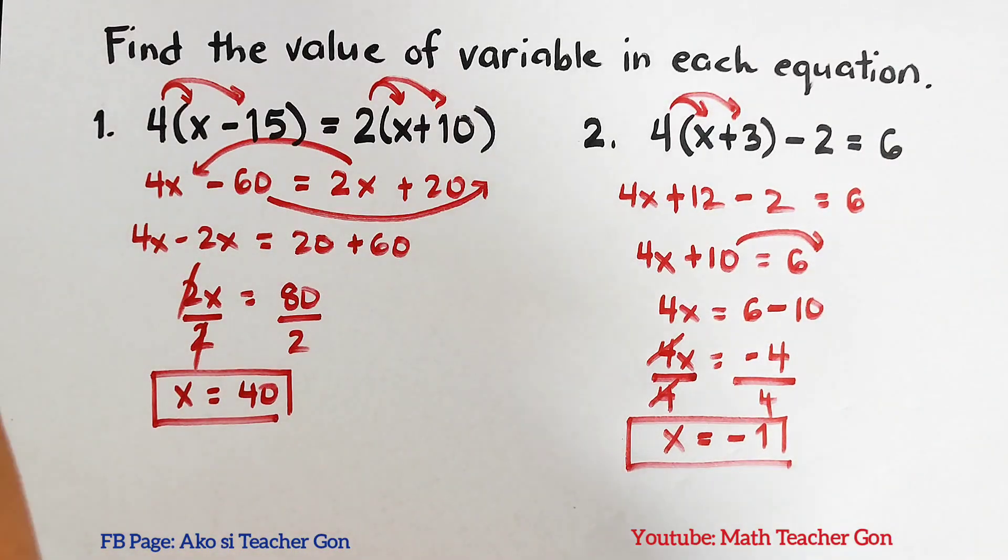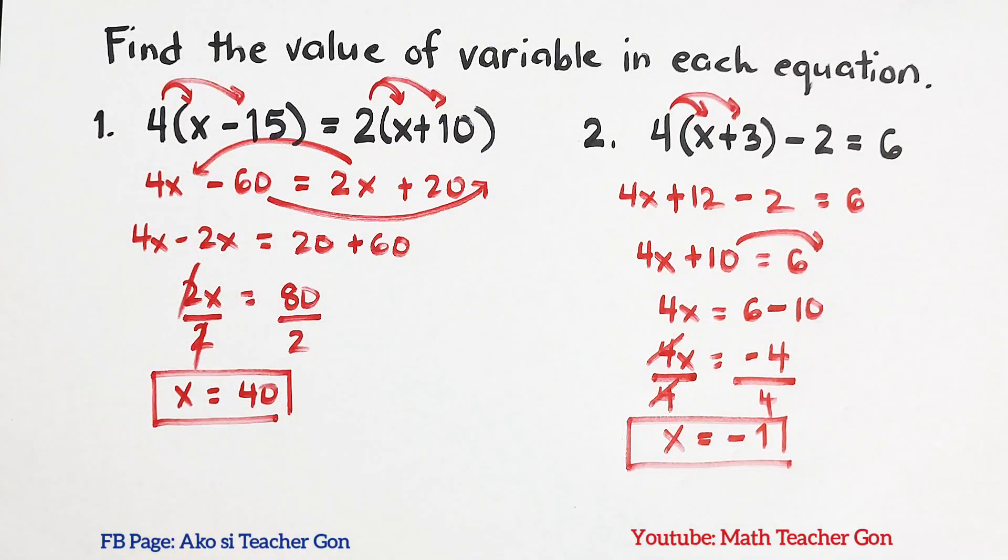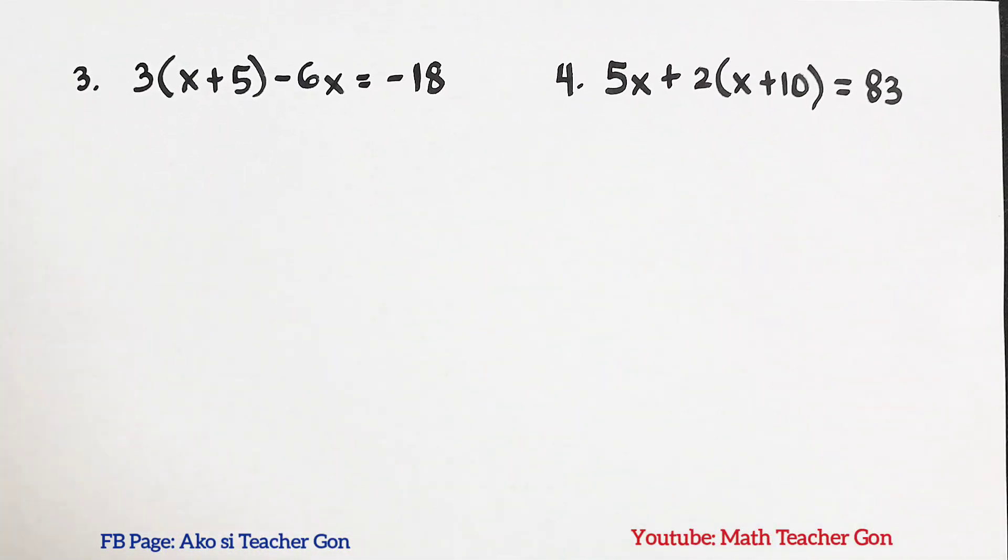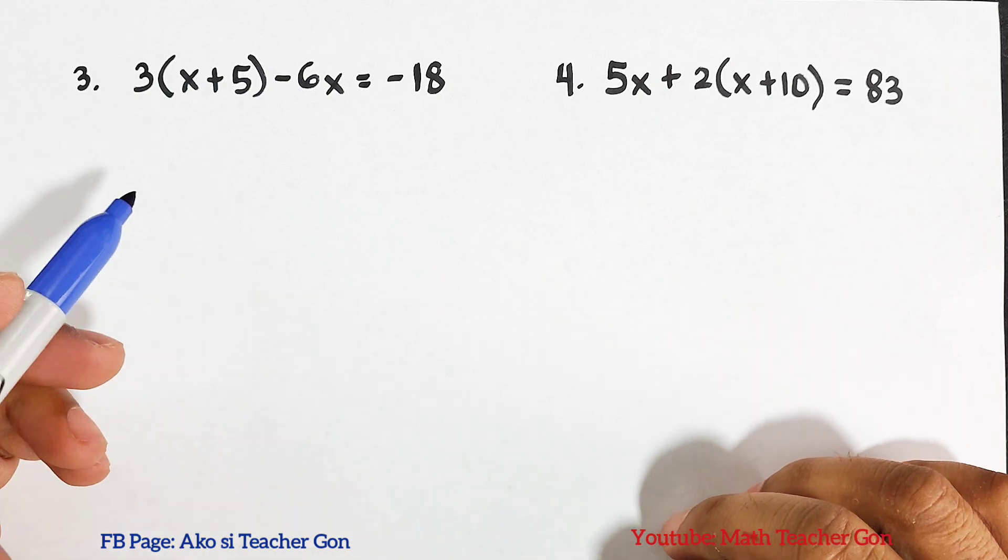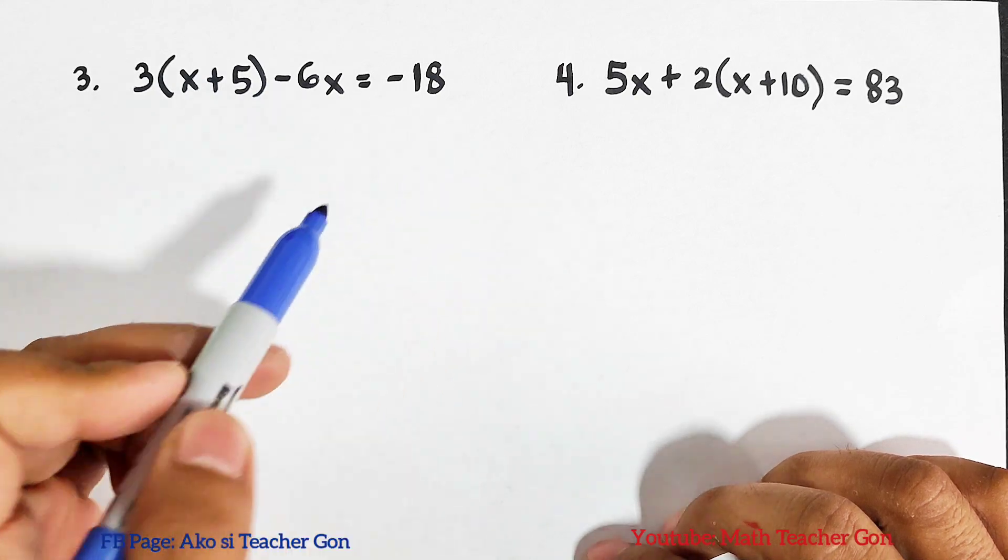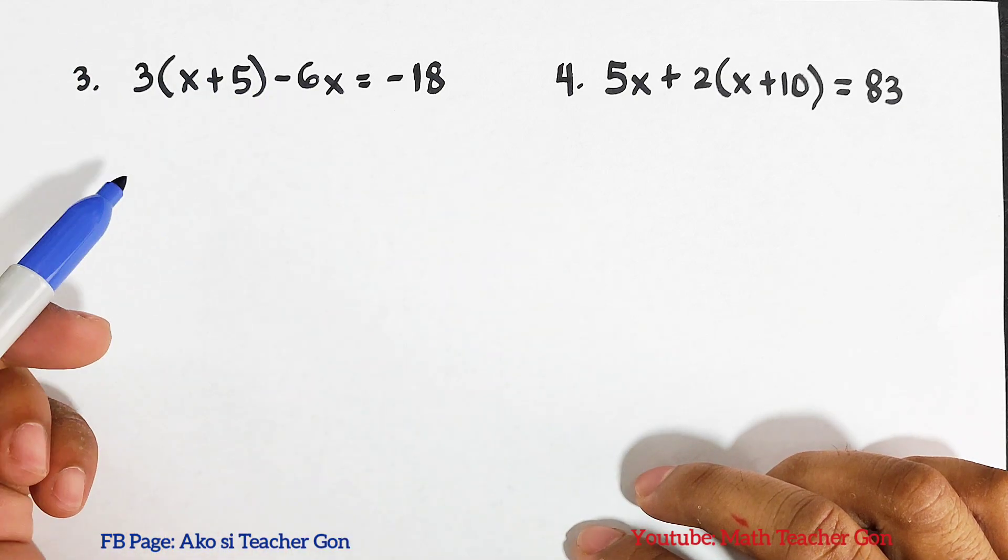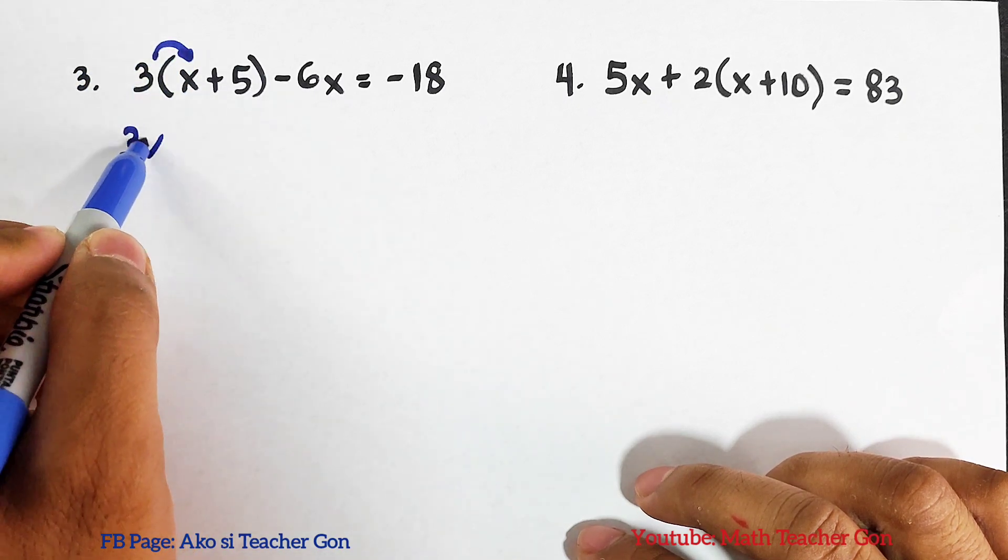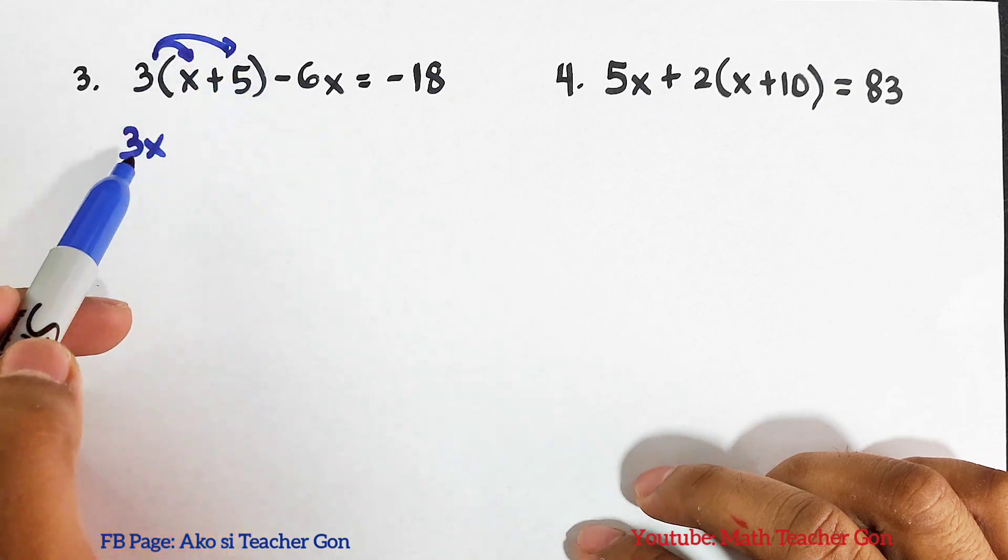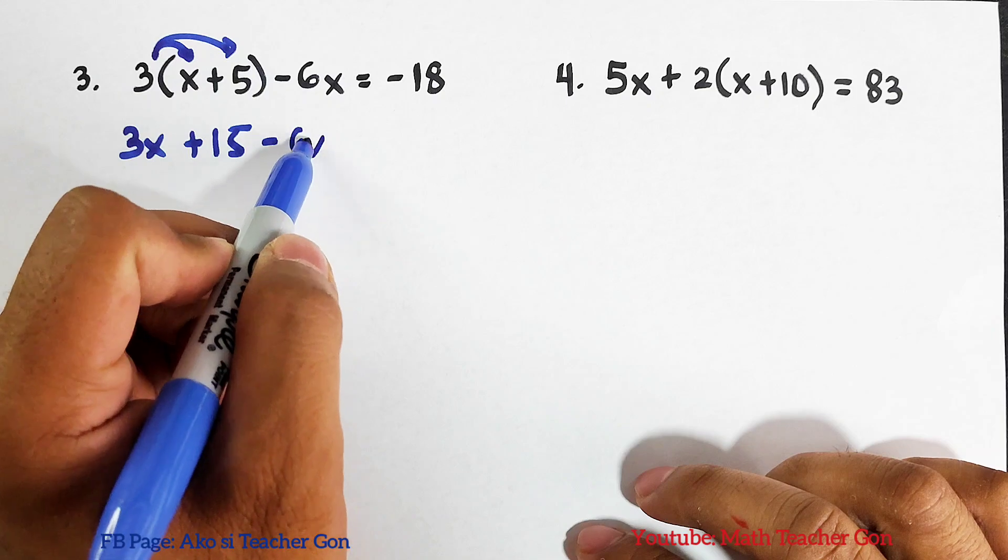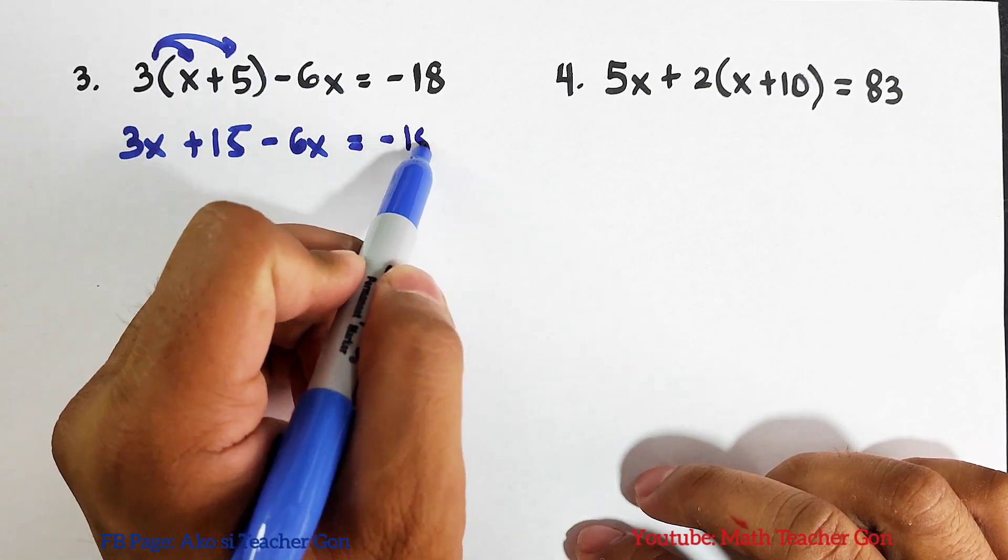Now I hope you are learning something from this part of the video and let's continue solving for the variable x. Let me change our marker. Let's continue. We have 3(x + 5) - 6x = -18. Here we will use 3x, 3 times 5, that will be plus 15, then copy minus 6x is equal to negative 18.